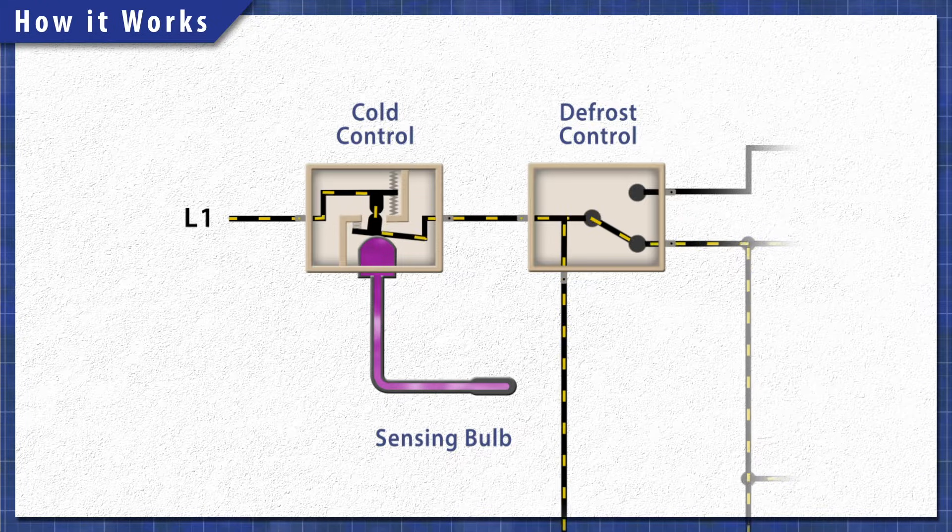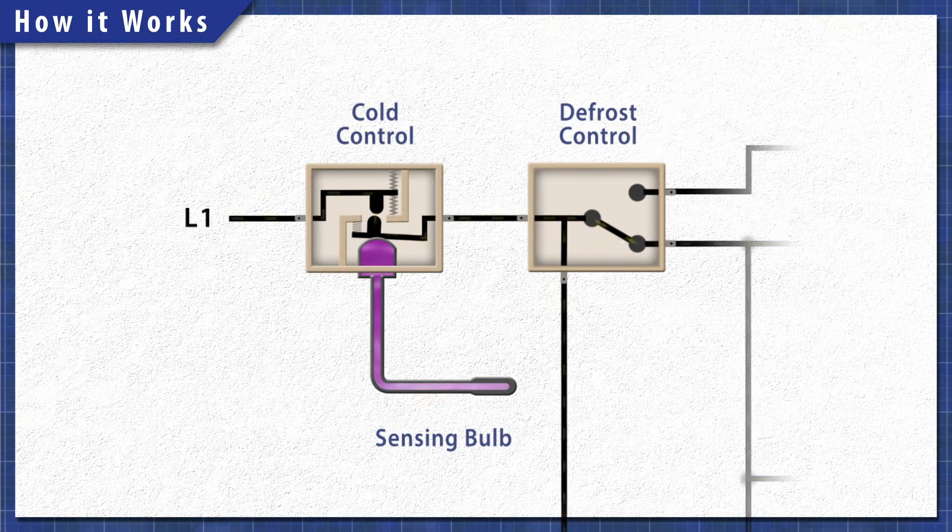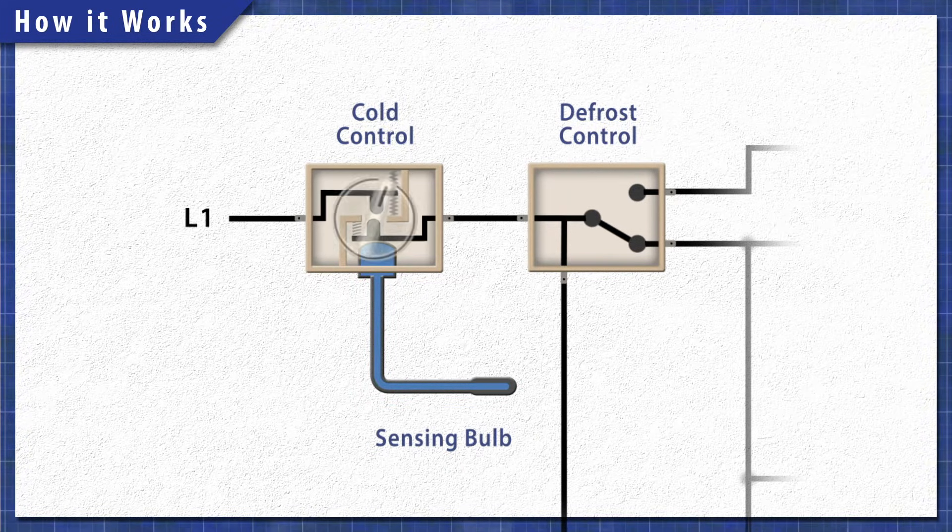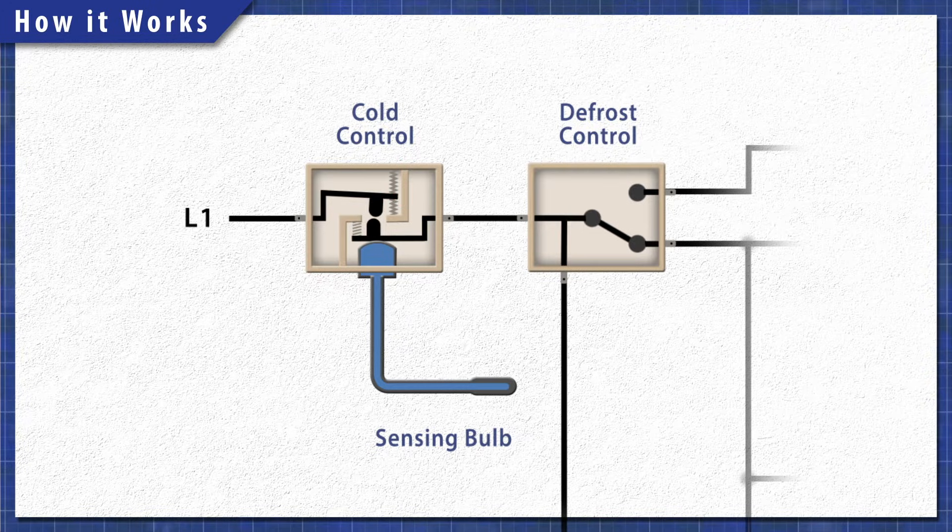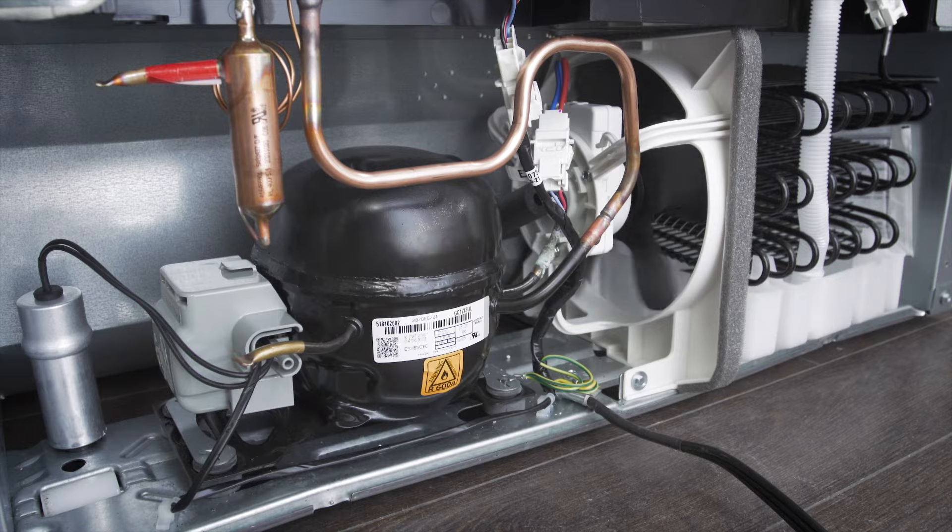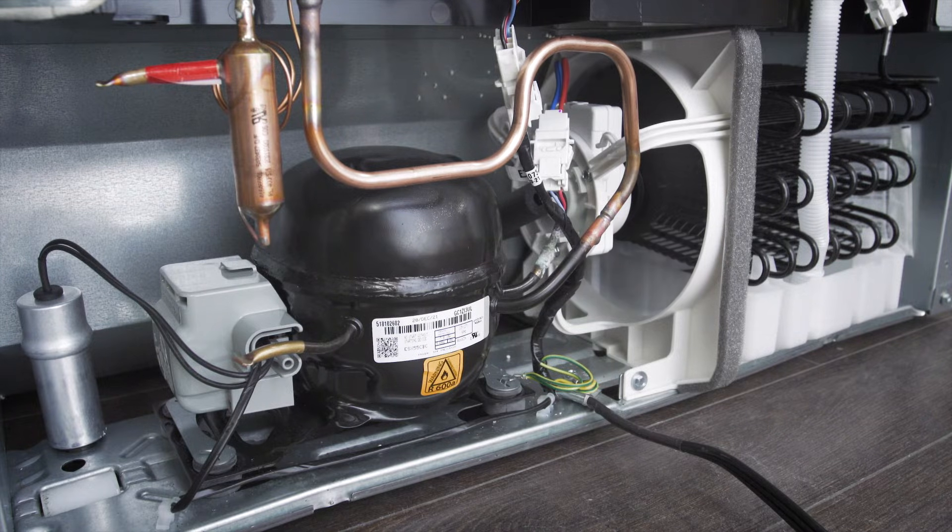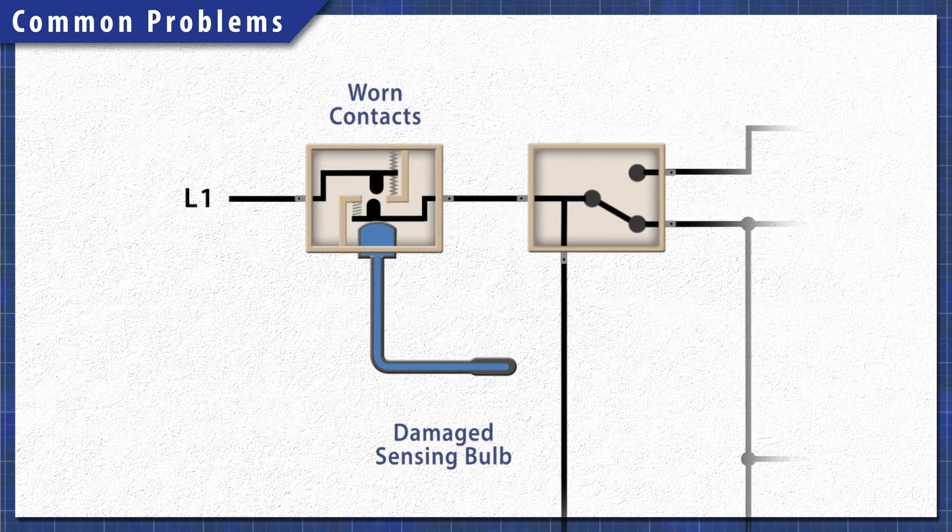When contacts close, they connect power to the cooling circuit. When it cools, the contacts open and the compressor shuts off. When the dial is turned to a colder setting, it moves one of the contacts closer. This means it takes less heat to close the contacts. In this case, the compressor runs more frequently, which lowers the fridge temperature.